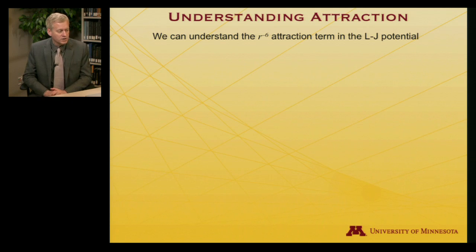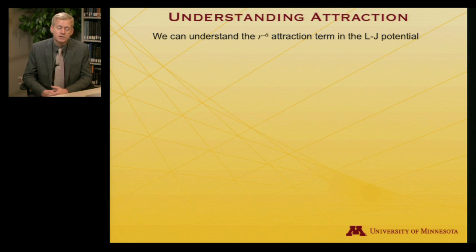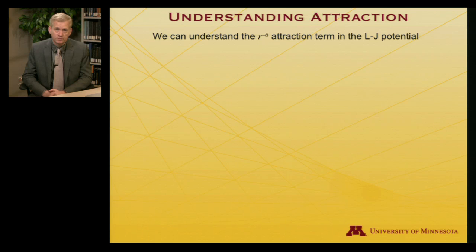I'd like to pause for a moment before looking at some different potentials to discuss the physics behind the various pieces of the Lennard-Jones potential. In particular, I'd like to look at the attractive term, which has an R to the minus 6 dependence.